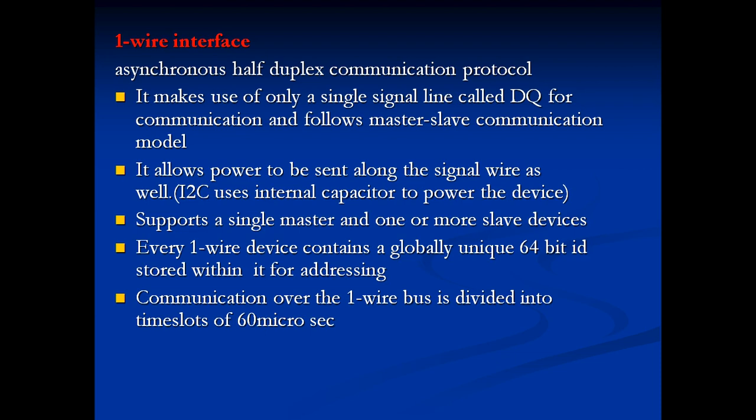UART — Universal Asynchronous Receiver Transmitter — uses asynchronous data transmission; it does not require any clock signals to synchronize transmissions. Instead, it depends on predefined agreements between devices known as handshaking signals. The transmission line of the sending device is connected to the receiving device. It also provides hardware handshaking signals for controlling serial data flow. Most modern microprocessors have integrated UART functionality.